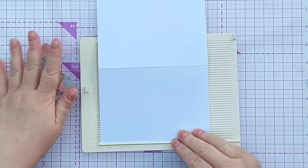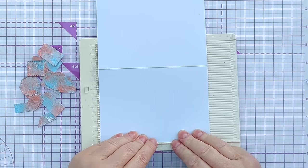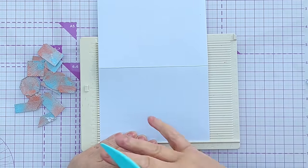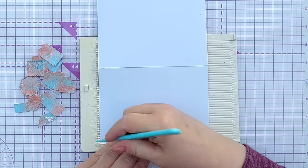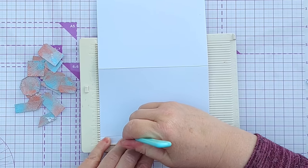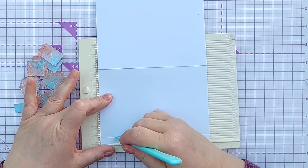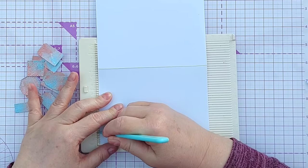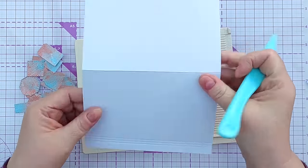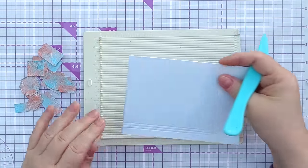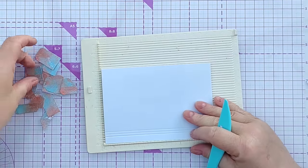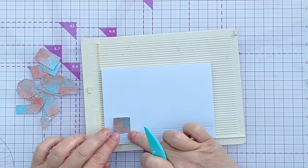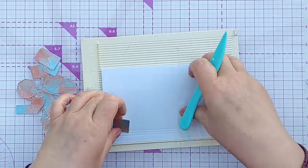I'm going to stick my vases directly onto my card blank but I want to give them something to sit on so they're not floating in mid-air. And I can create a shelf simply by running my bone folder down some grooves in my scoreboard and that will create a little subtle shelf for my vases to sit on.